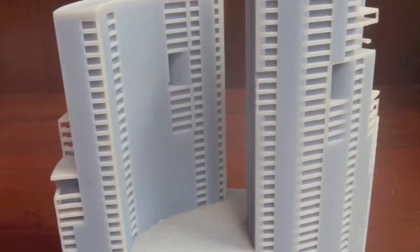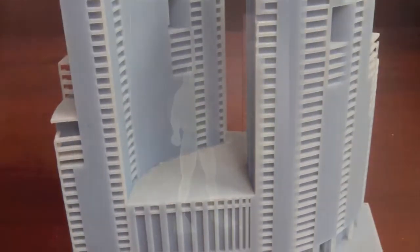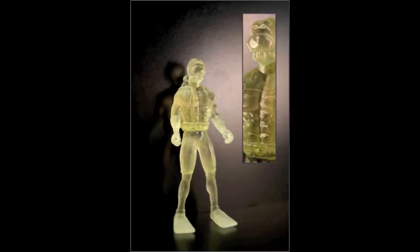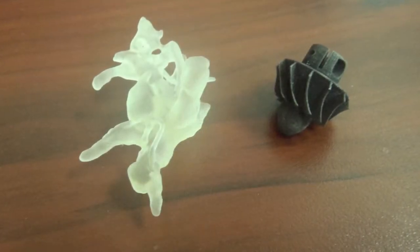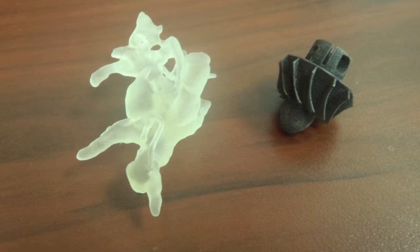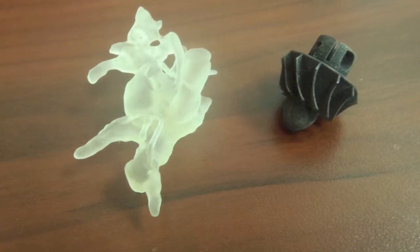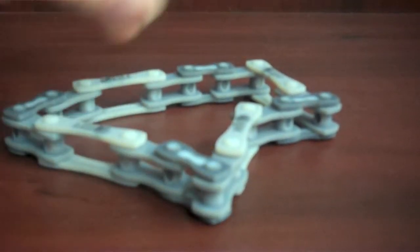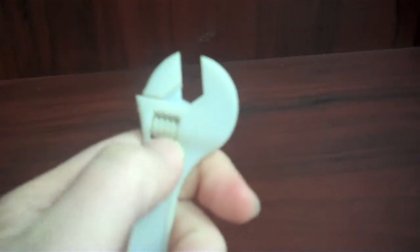Objet's PolyJet process is great for pieces that are highly detailed. PolyJet is a very clean and accurate process that is also fast and versatile. Parts can be many different geometries, have different mechanical properties, and can be made in many different colors. Parts can also be painted or dyed. The Objet machine is also great for working assembly parts.